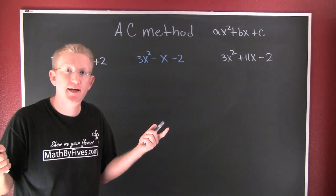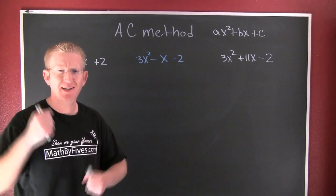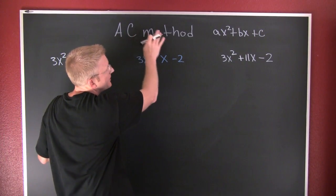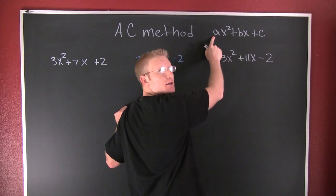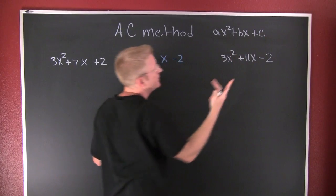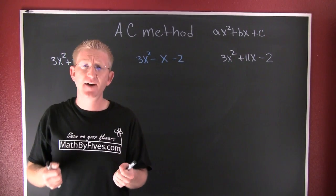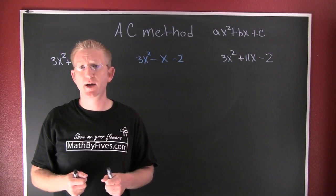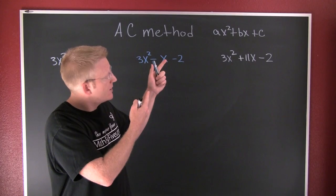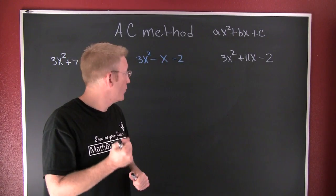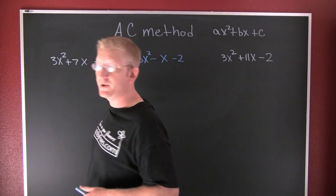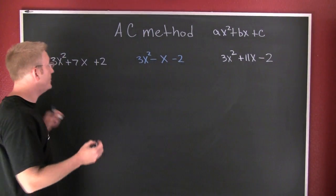Here we're going to be factoring by the AC method. The AC method refers to taking the product of the leading coefficient and the constant, finding that product, and breaking it into its factors so that we can tell whether or not something is factorable over the integers. I mean things that are quadratic — expressions that are quadratic. I've put up three of them here, and I want to identify my A, my B, and my C.